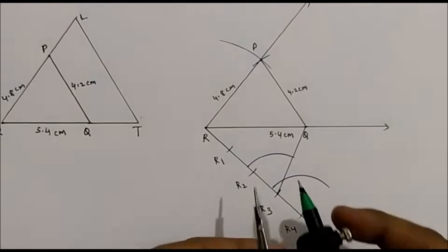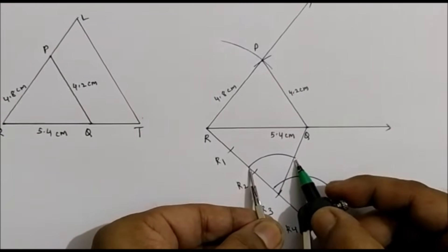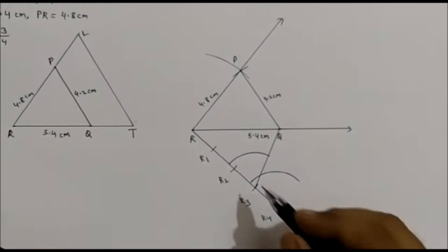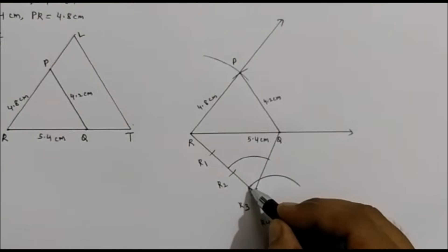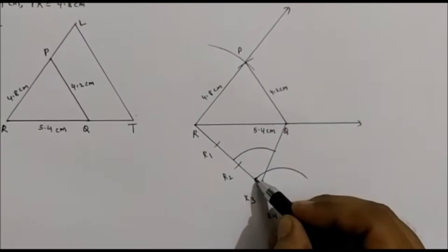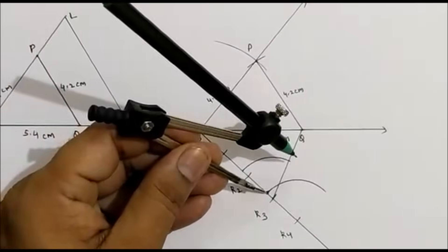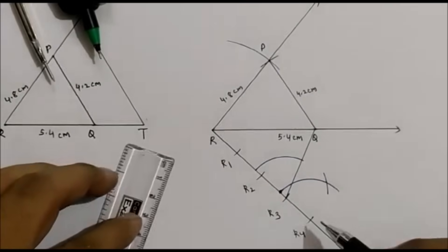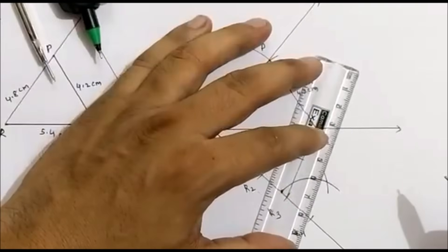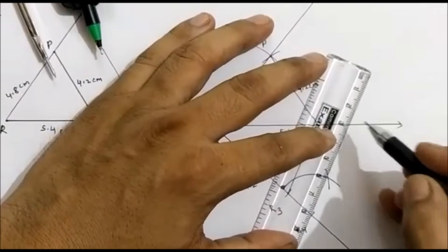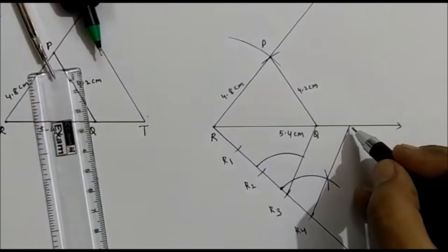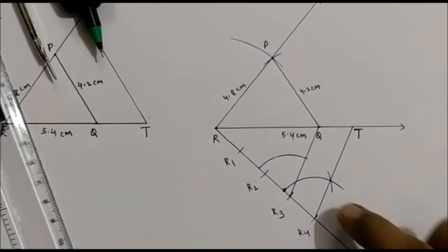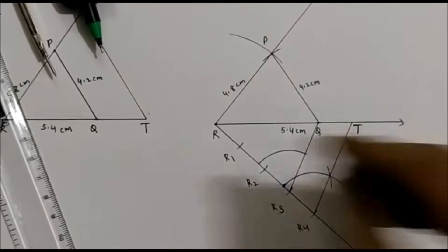Now take the distance of that arc. See on this ray where the intersection point is. From that point, keep the compass and cut the previous arc. Then from R4, join with this intersection point — you will get a parallel line. This line is parallel, and we mark this point as T.